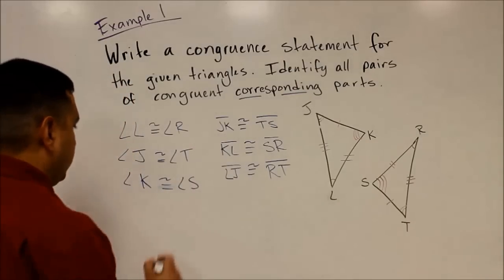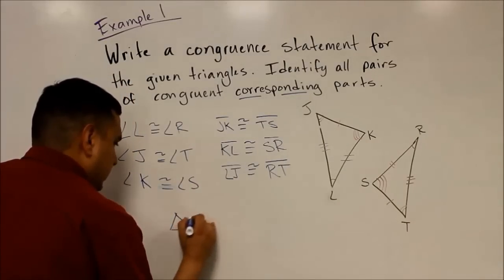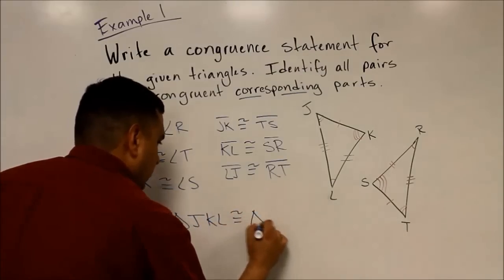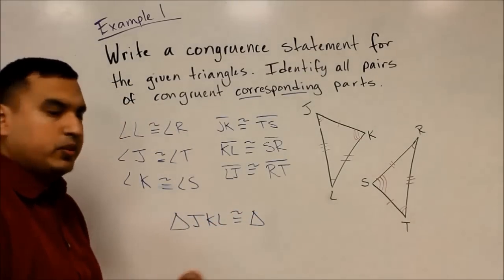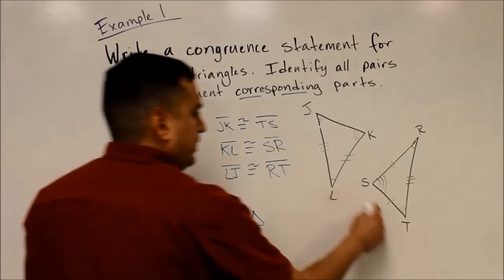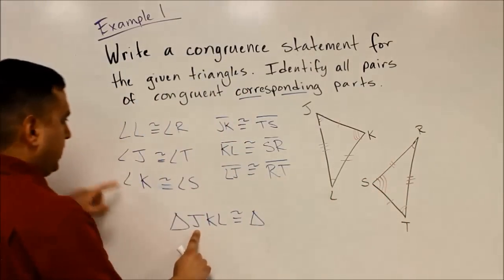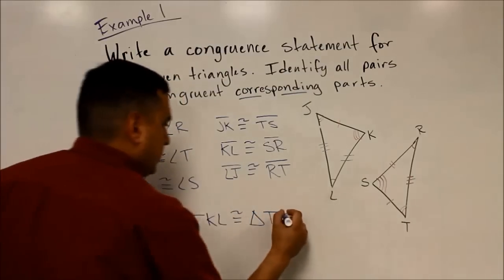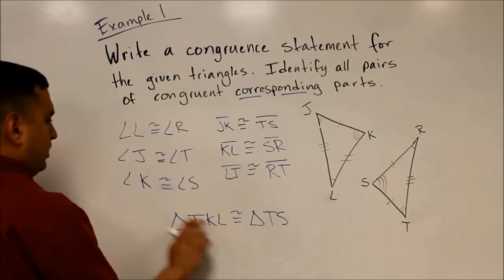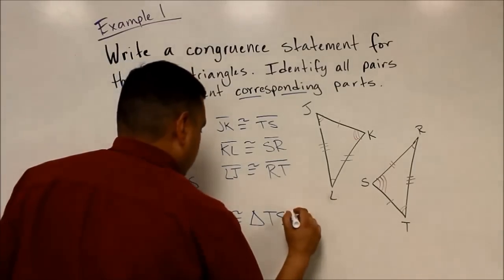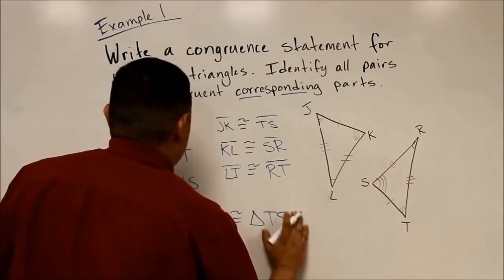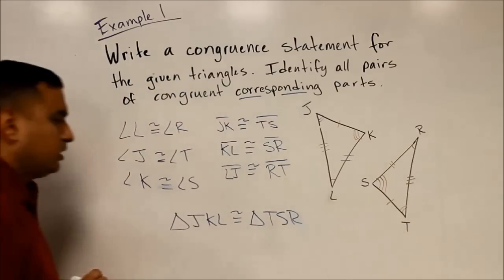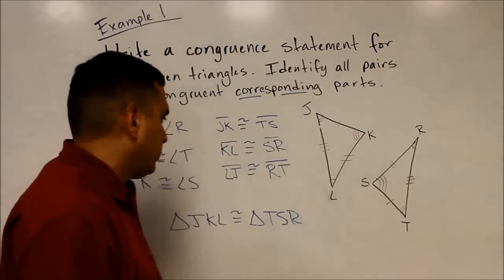Now I can name them. If I call the first triangle JKL, my corresponding letters tell me which to match it up to. J matched with T, so I start with T. K goes to S, and L corresponds to R. So triangle JKL is congruent to triangle TSR.